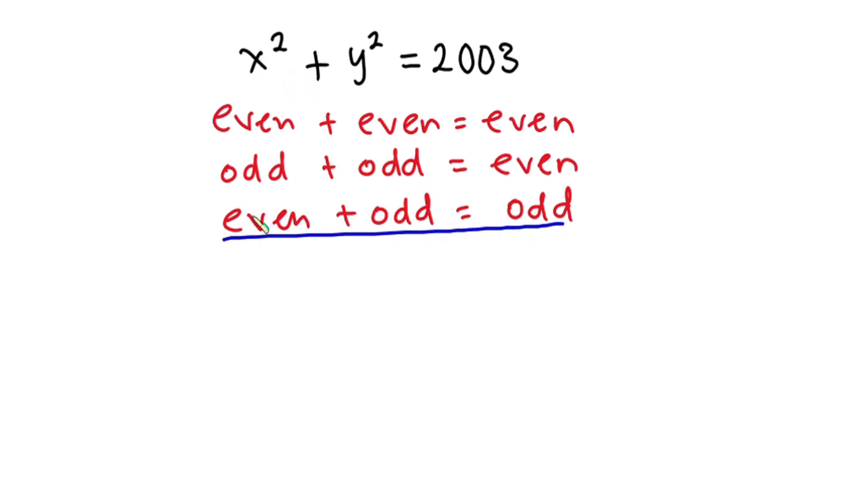So let's let x be the even number and then y be the odd number. So we have x is equal to 2n, which is the even number. Then y be equal to 2m plus 1, which is the odd number.